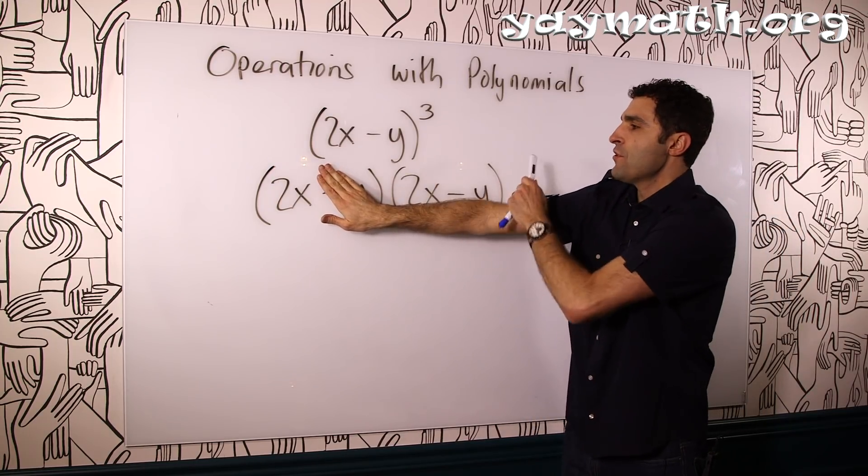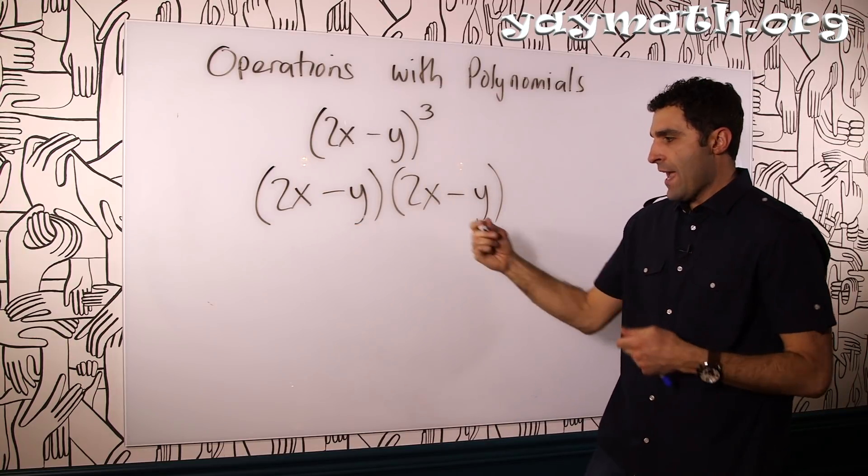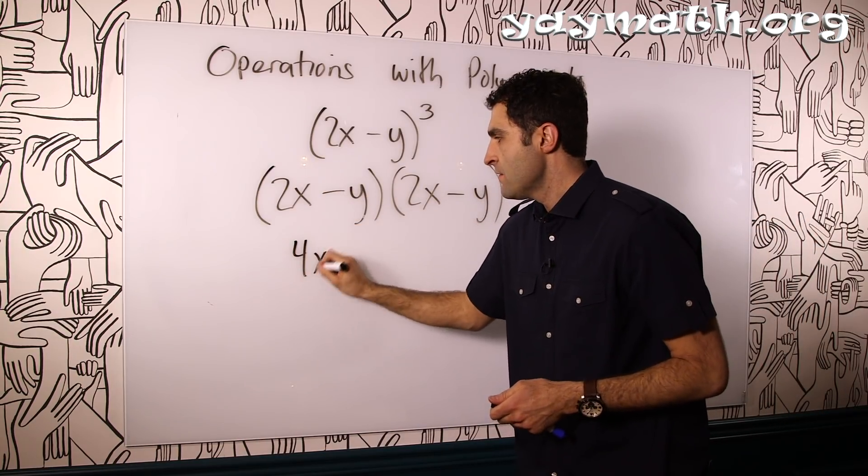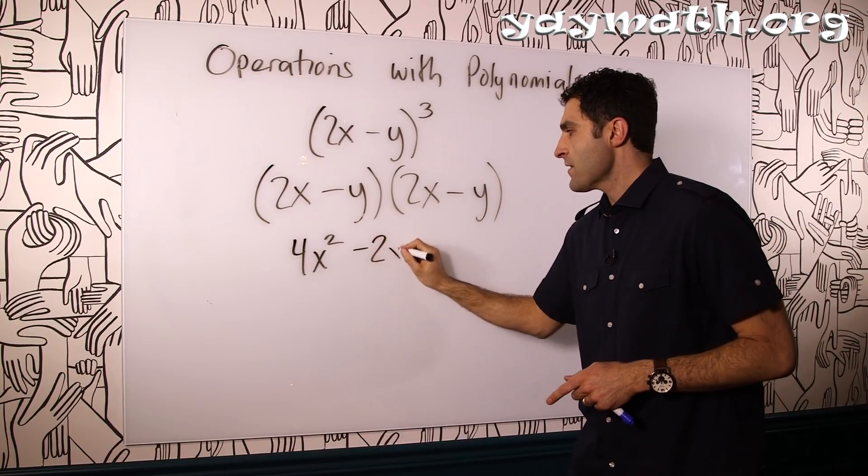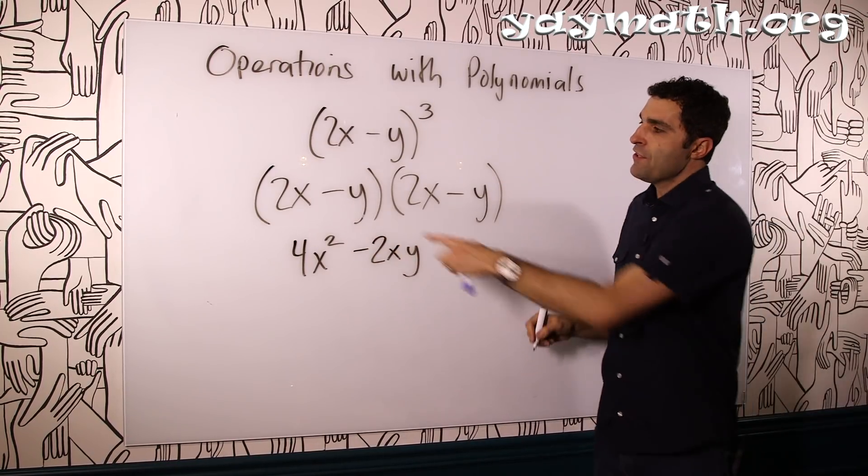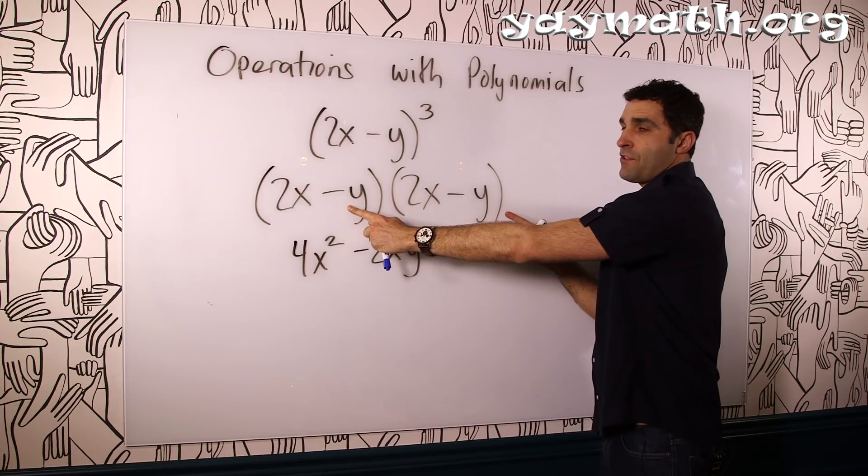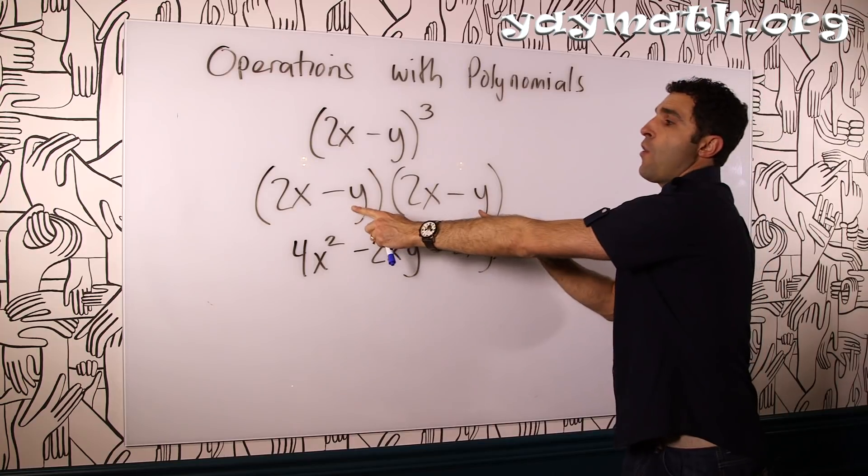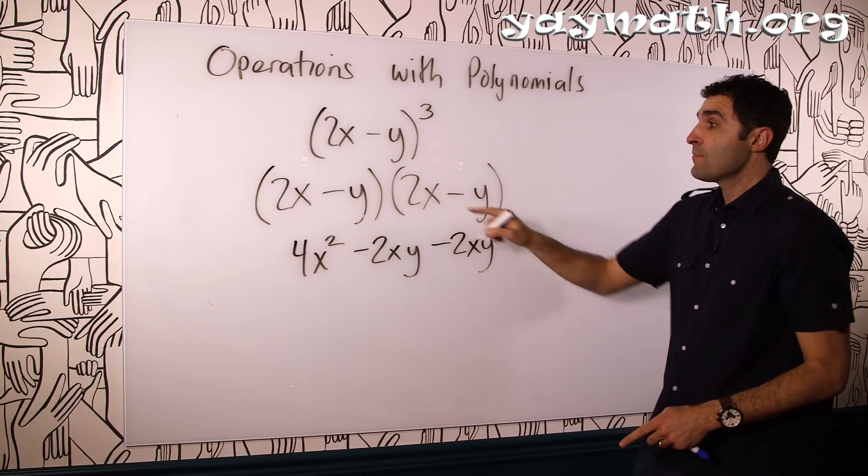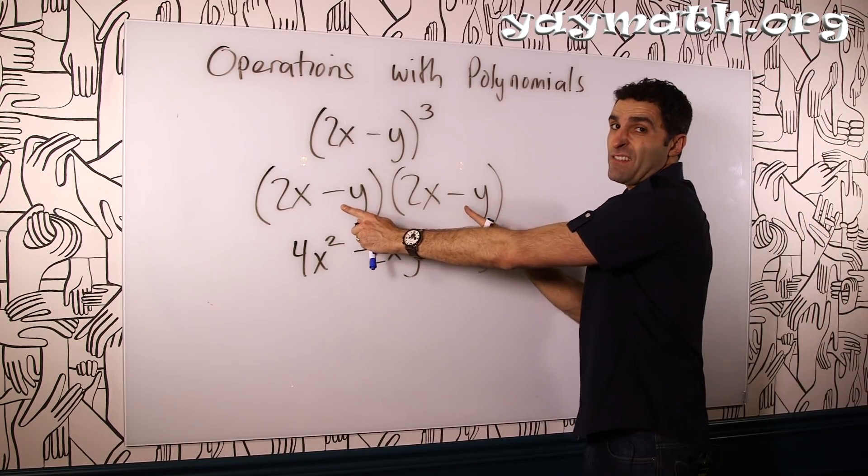2x times 2x is 4x squared. Then you have 2x times negative y is negative 2xy. Then you have this negative y times these two. That's again negative 2xy. And then you have minus y squared. No, plus y squared. Minus times minus is plus.